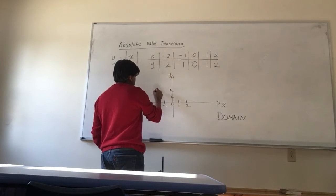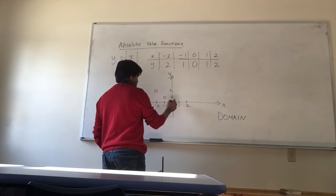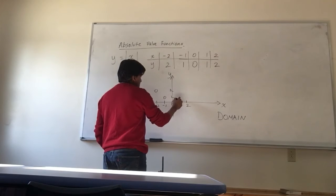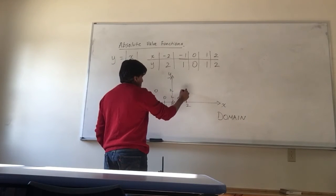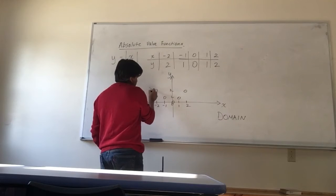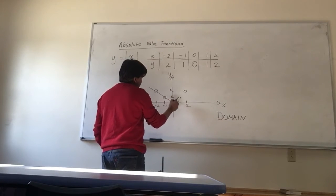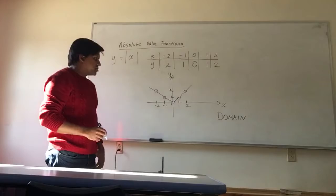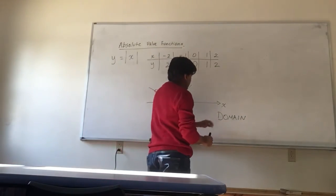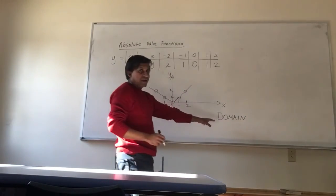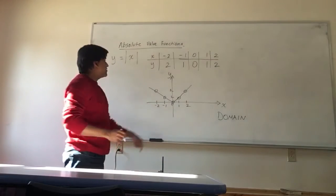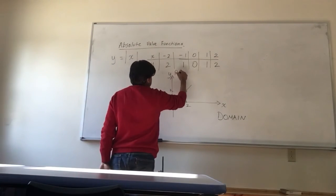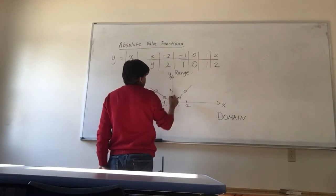So let's plot this graph. When it's negative 2, it's 2. When it's negative 1, it's 1. When it's 0, it's 0. When it's 1, it's 1. When it's 2, it's 2. So if we plot this, we actually get a V-shaped graph. The domain for the X-axis is from negative infinity to positive infinity. But look at the range. It starts from 0.